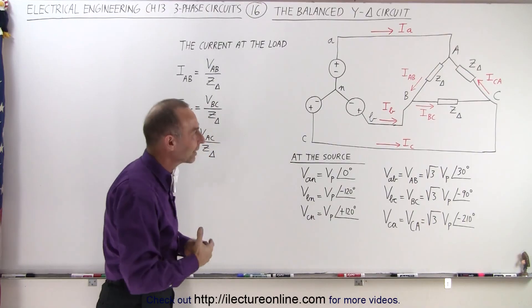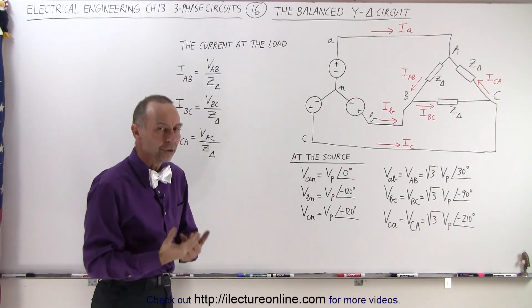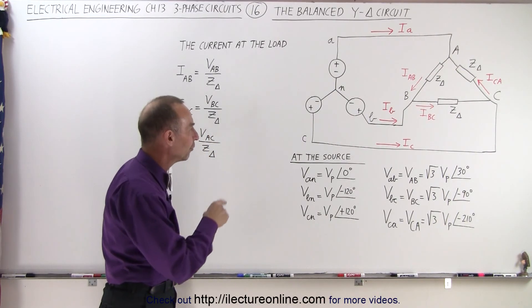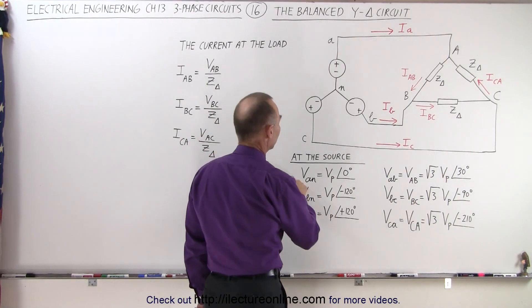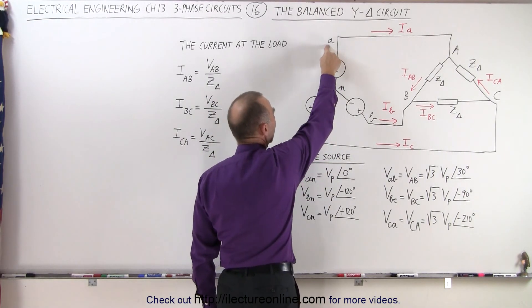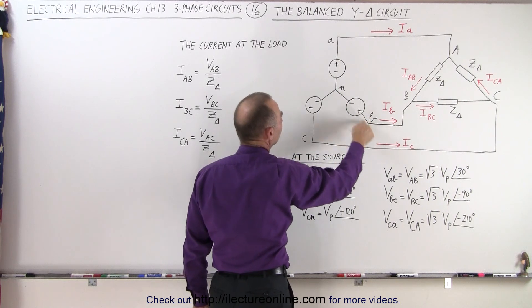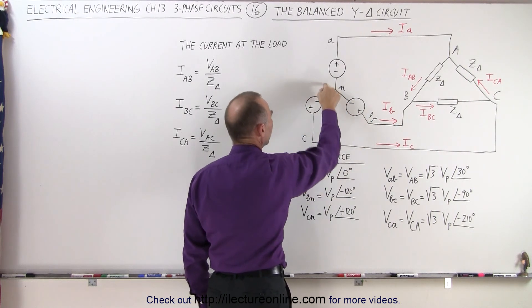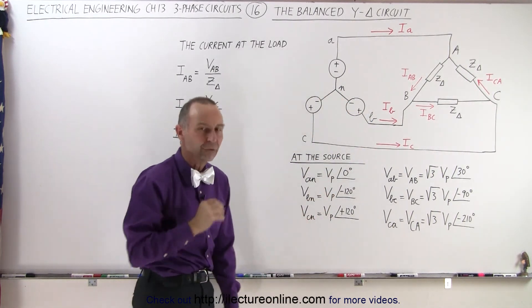Let's take a look and see how we calculate the currents and voltages. First of all, the voltages at the source: we have the voltage from A to N (N being the neutral), the voltage from B to N, and the voltage from C to N. Those are considered the phase voltages.